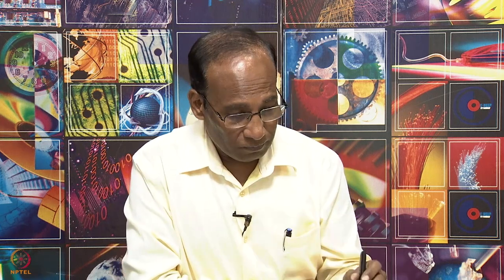We discussed this plot: initially a 3/2 R contribution is present. For a linear rotor, as temperature increases, the full R rotational contribution is added, giving 5/2 R. Further increase in temperature, when it is much higher than the characteristic vibrational temperature, adds another R, giving 7/2 R. Further increase leads to dissociation; a diatomic molecule forms 2 atoms, each with translational degrees of freedom of 3/2 R, giving 3R total.